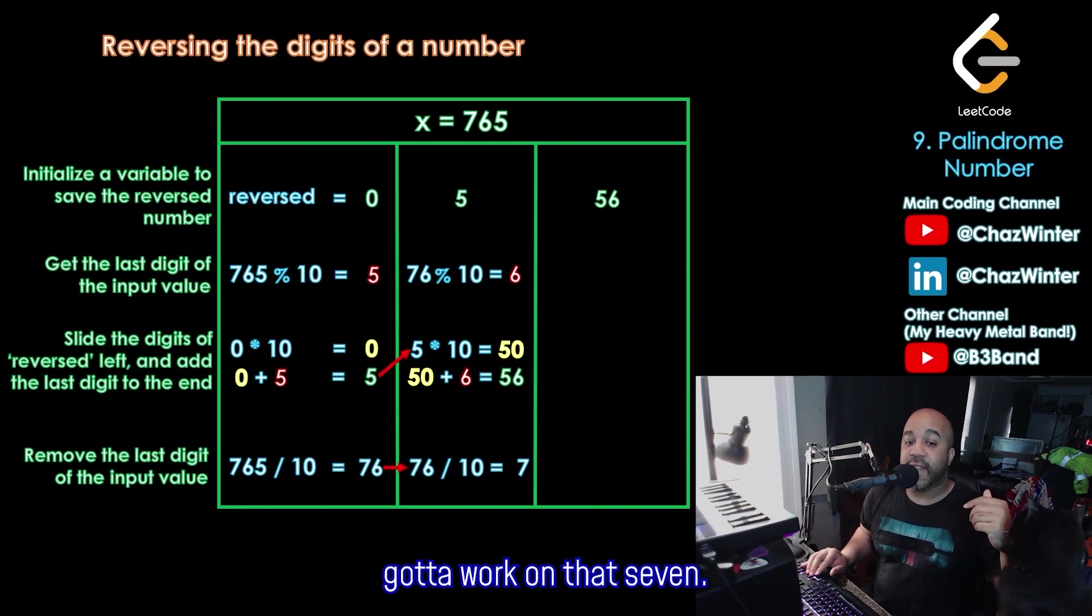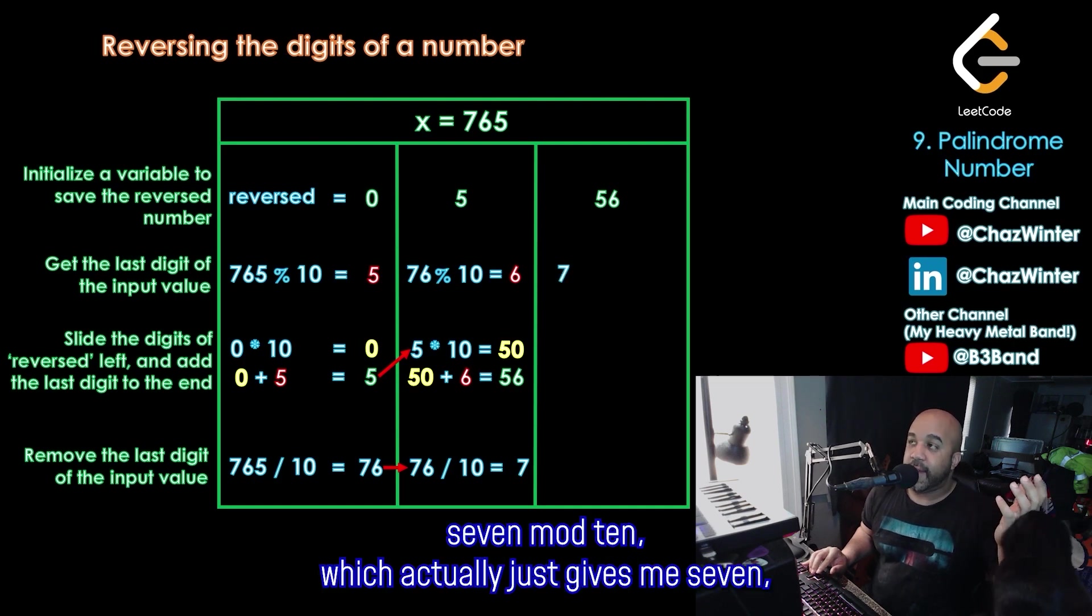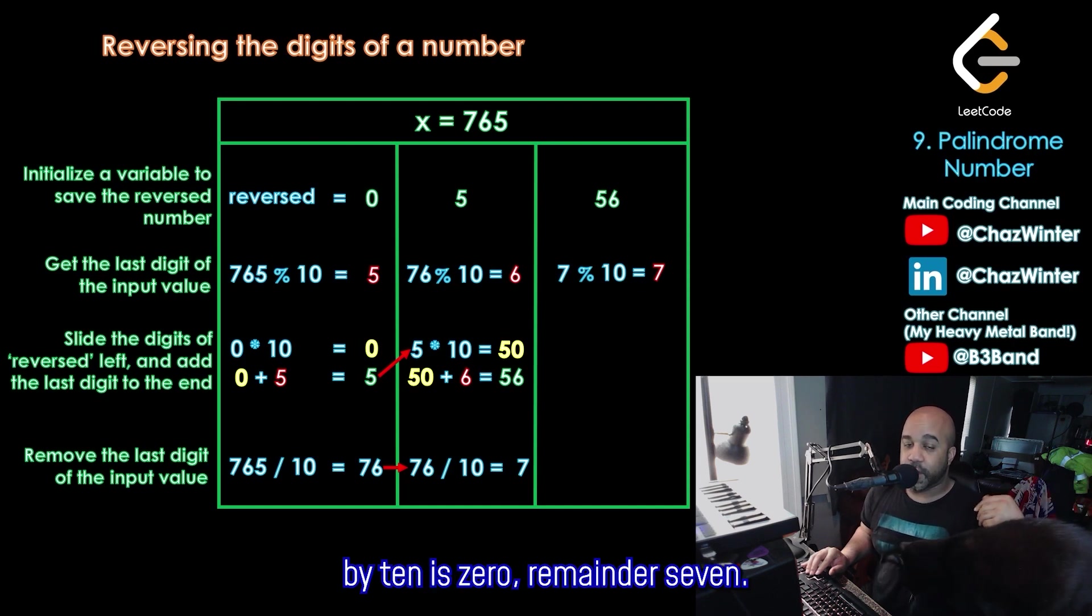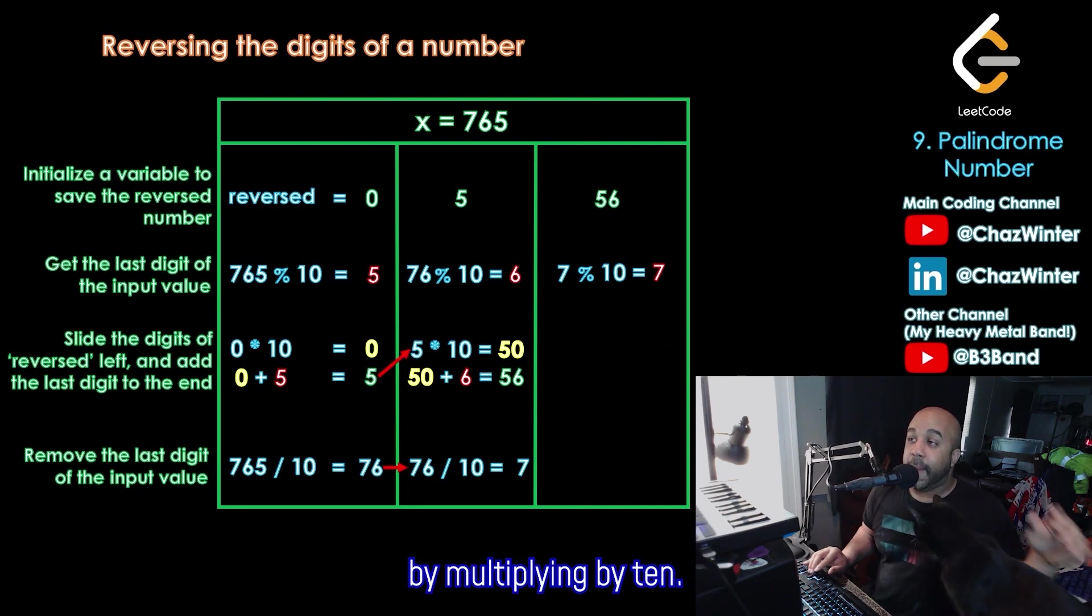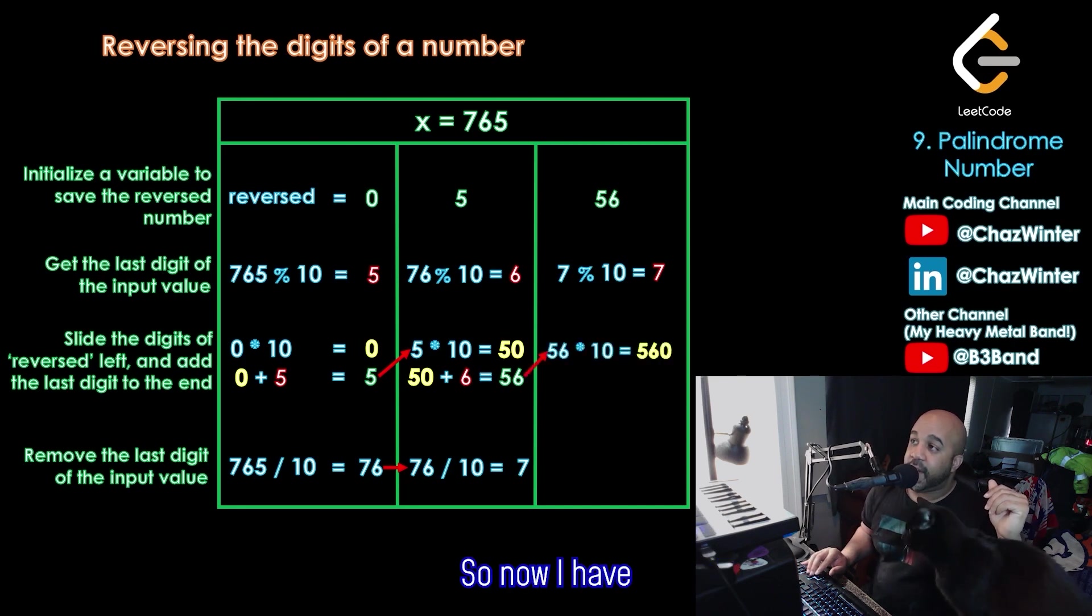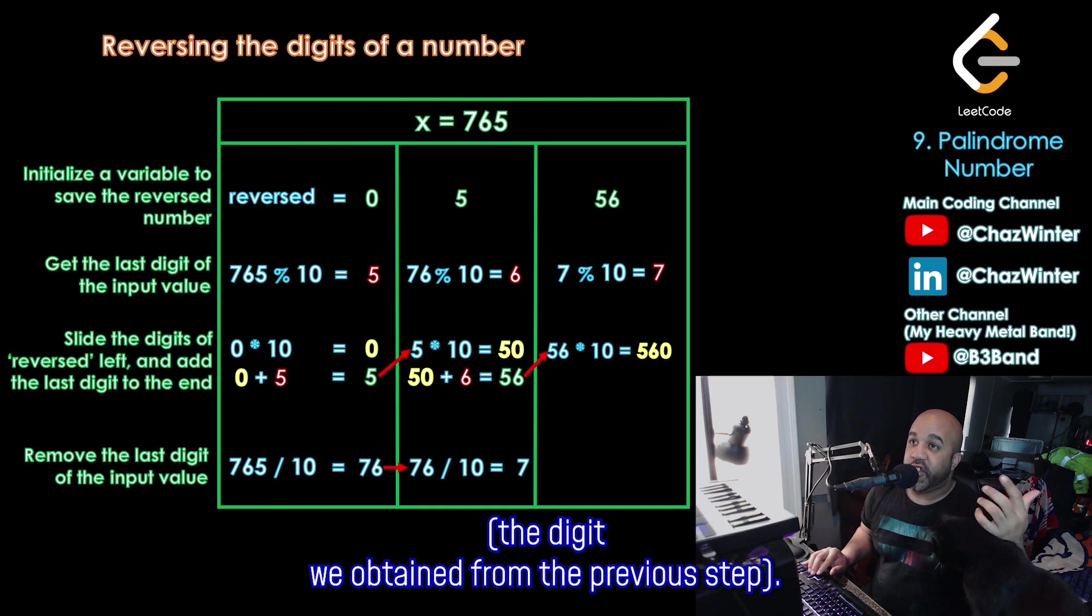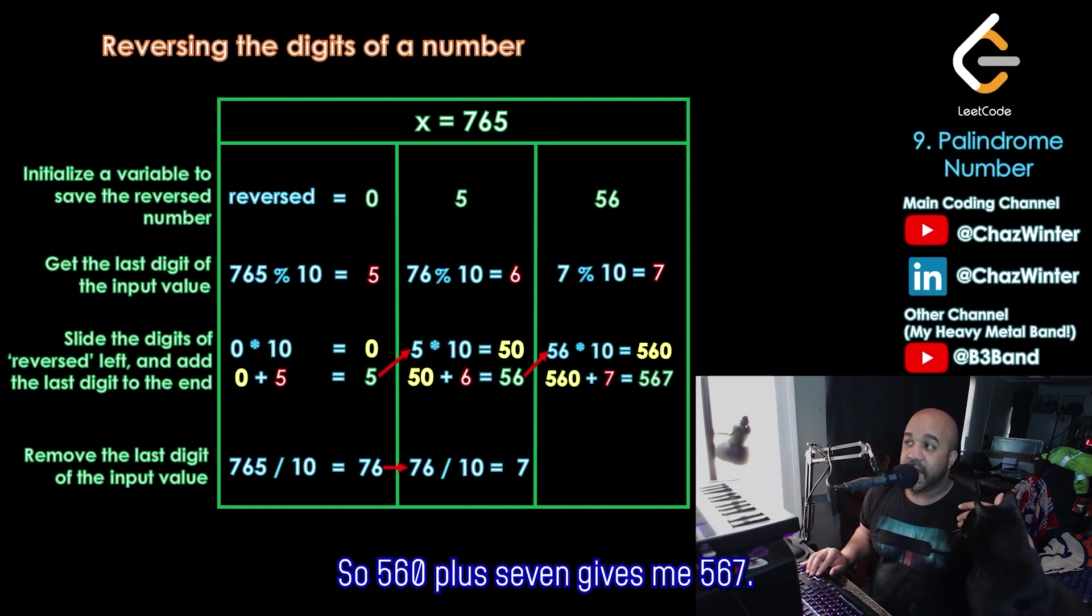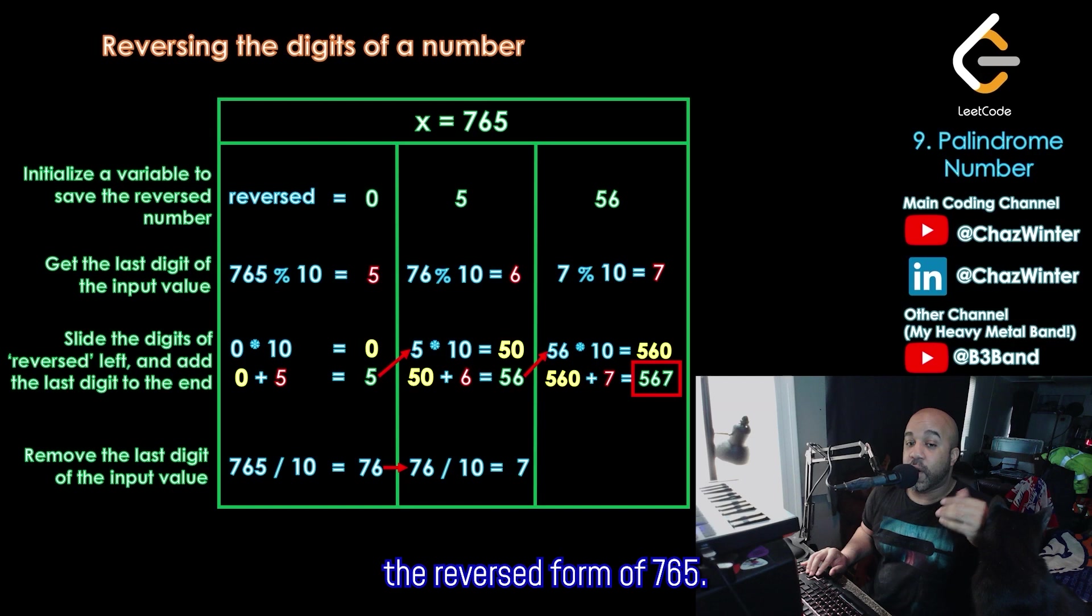So now the last step, I got to work on that 7. So I'll get the last digit of 7. So I'll just do 7 mod 10, which actually just gives me 7 because 7 divided by 10 is 0 remainder 7. I'm going to take reversed and slide all those digits again by multiplying by 10. So now I have, instead of 56, I have 560. And that now leaves me space to add 7, the digit we obtained from the previous step. So 560 plus 7 gives me 567. And notice that that is actually the reversed form of 765.